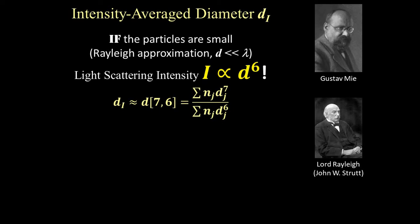Thus, the intensity average diameter, dI, is something close to d76. So in this case, a 100nm particle counts a million times more than a 10nm particle. This value may be useful for optical properties like turbidity and transparency.